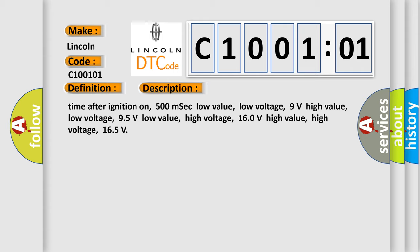Time after ignition on: 500 milliseconds. Low value low voltage: 9 volts. High value low voltage: 95 volts. Low value high voltage: 160 volts. High value high voltage: 165 volts.